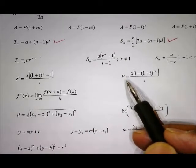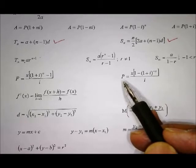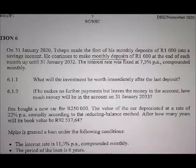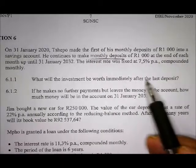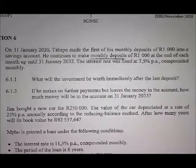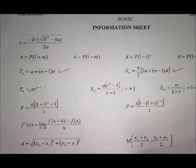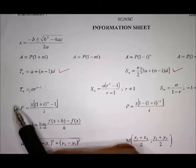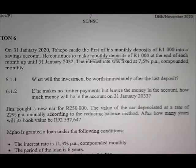So in this example, of course, because we want to know what is the amount in future, you're going to choose the future value formula, which is therefore this one, because you want to know what the amount is going to be in the future.